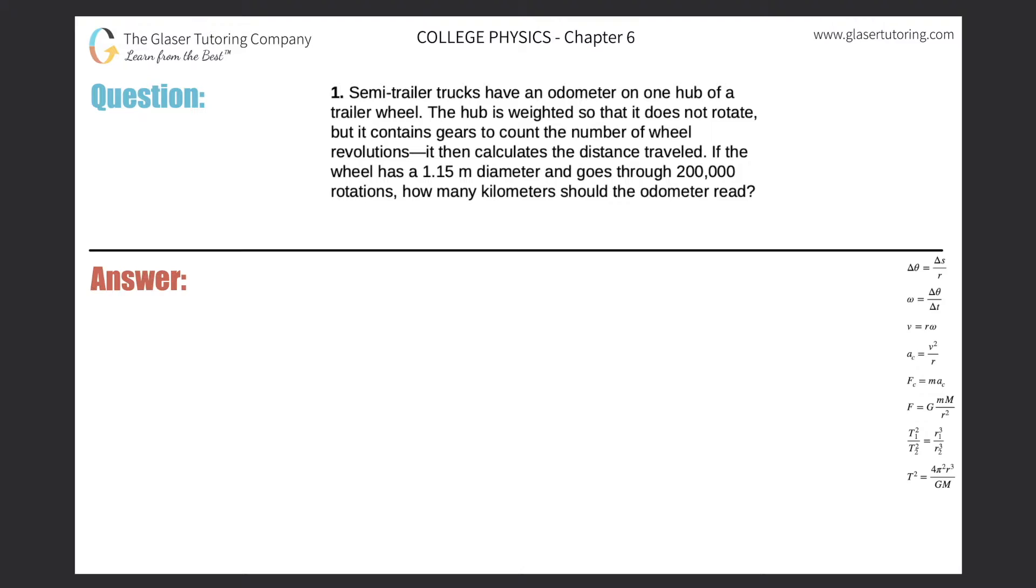Semi-trailer trucks have an odometer on one hub of a trailer wheel. The hub is weighted so that it does not rotate, but it contains gears to count the number of wheel revolutions, then it calculates the distance traveled. If the wheel has a 1.15 meter diameter and goes through 200,000 revolutions, how many kilometers should the odometer read?